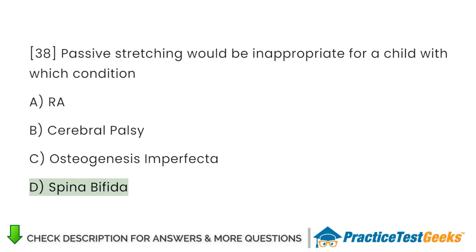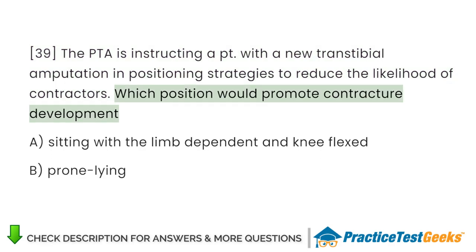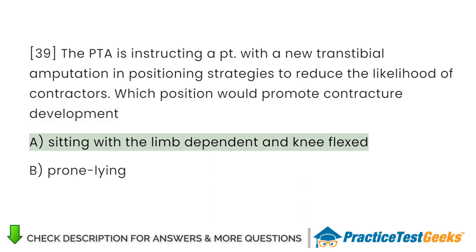A PTA is instructing a patient with a new transtibial amputation in positioning strategies to reduce the likelihood of contractures. Which position would promote contracture development? A. Sitting with the limb dependent and knee flexed. B. Prone lying.